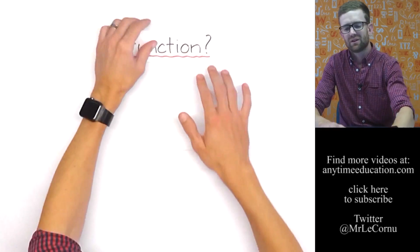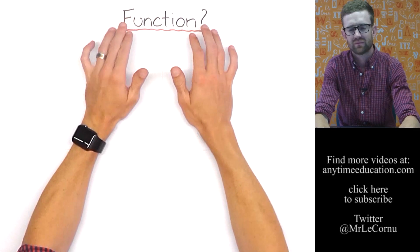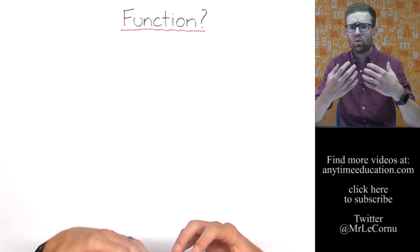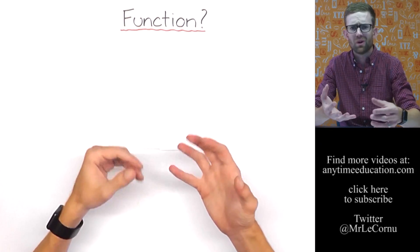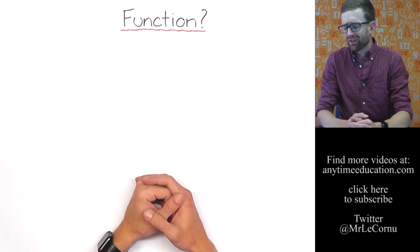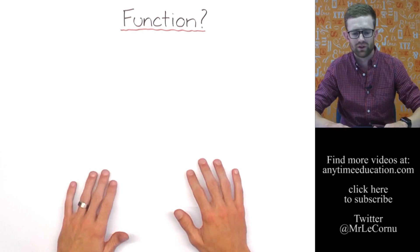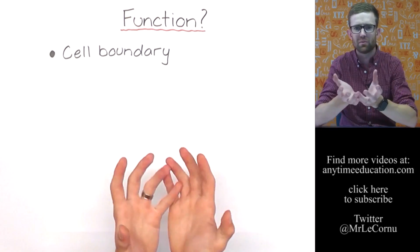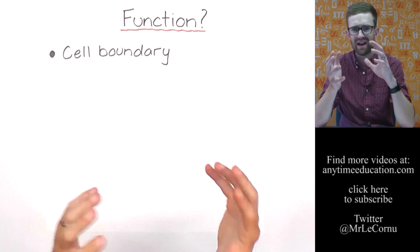What about taking a look at the function? When we're talking about the function, we're now looking at what is its job, what does it do? The cell membrane does a few important things. First and foremost, the cell membrane provides a boundary. Because of the cell membrane, we know where the cell starts and finishes.